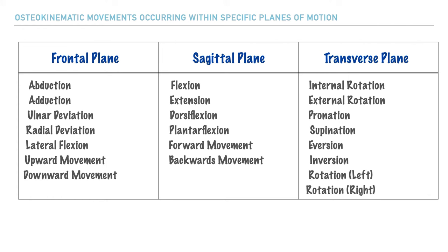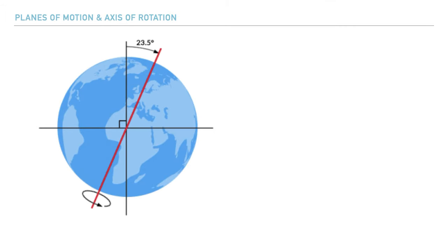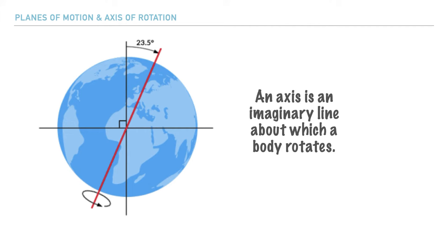Now that we have an understanding of how these planes divide the body and a list of movements that take place within each plane, let's look at the axes of rotation each of these planes have. It will be most helpful to define what an axis is — it is an imaginary line about which a body rotates. You're most likely familiar with the fact that the earth rotates on an axis, and what we want to pull from this is that all osteokinematic movements within the body have a rotational component to them.